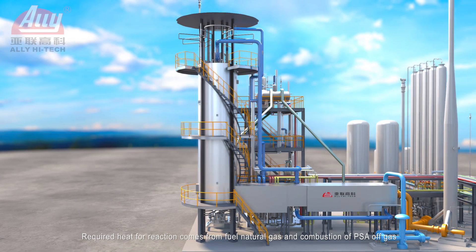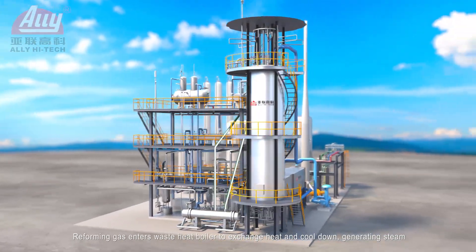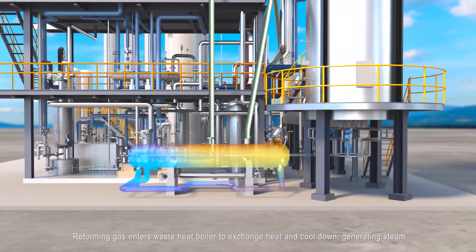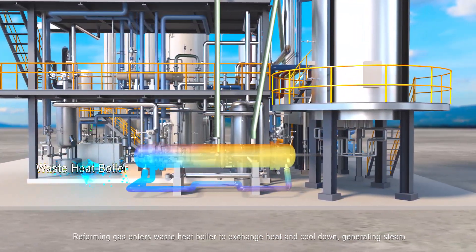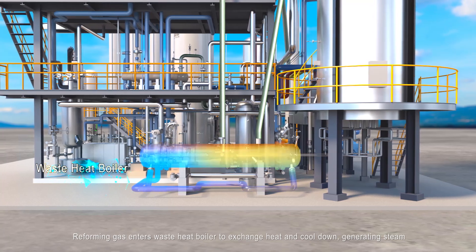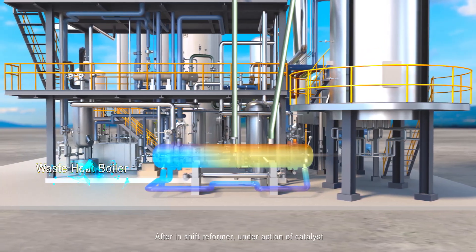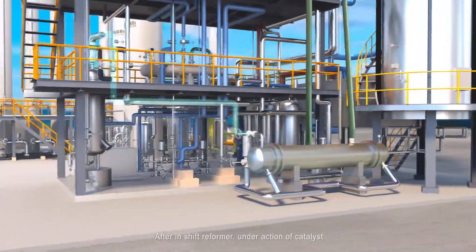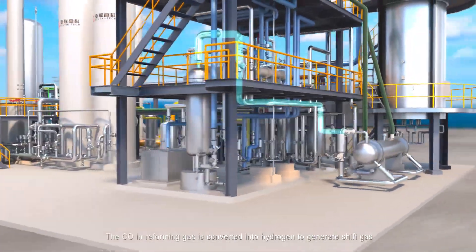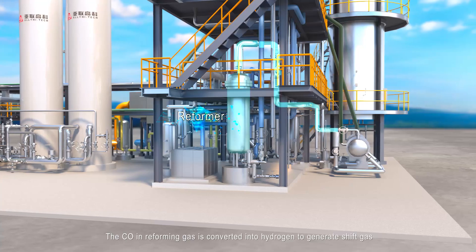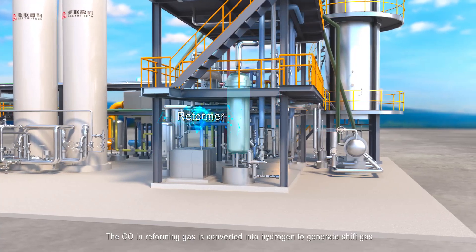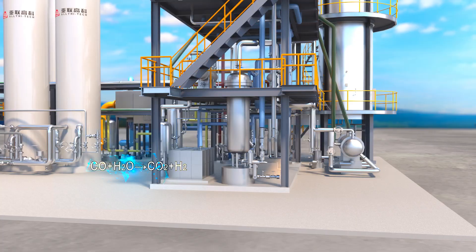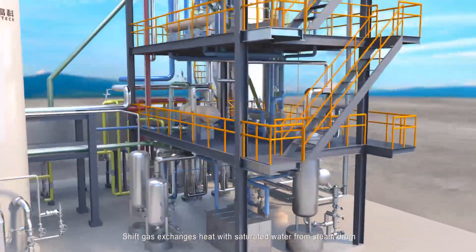Reforming gas enters the waste heat boiler to exchange heat and cool down, generating steam. After the in-shift reformer, under the action of catalyst, the CO in the reforming gas is converted into hydrogen to generate shift gas.